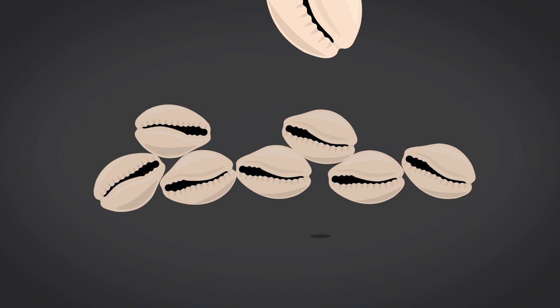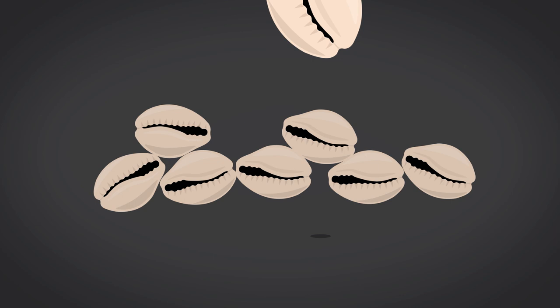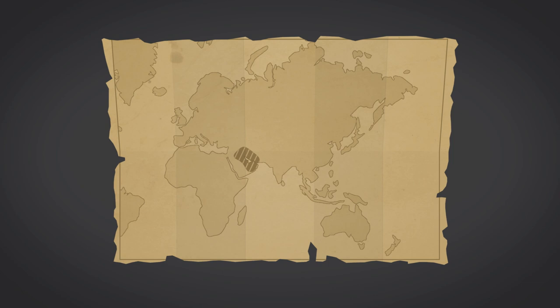Kauri shoals, with their attractive appearance and the ease with which they can be counted were a particularly popular form of money in ancient times, their use stretching across many parts of Asia and Africa.